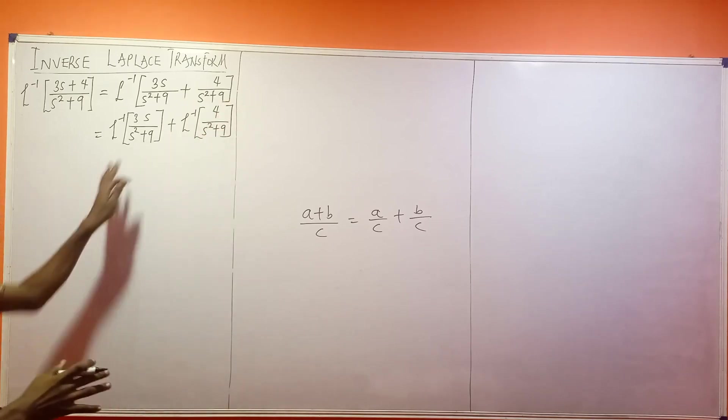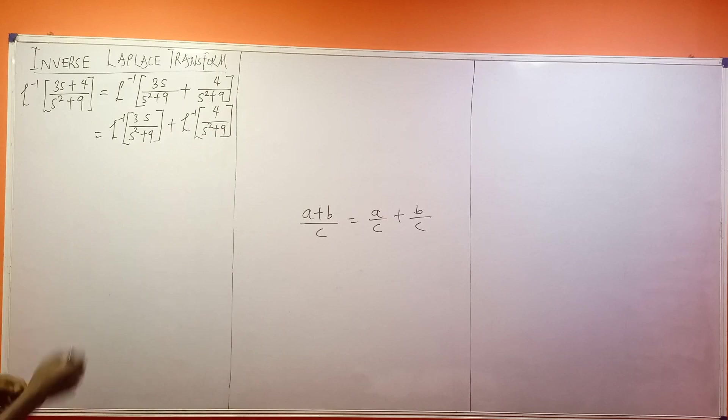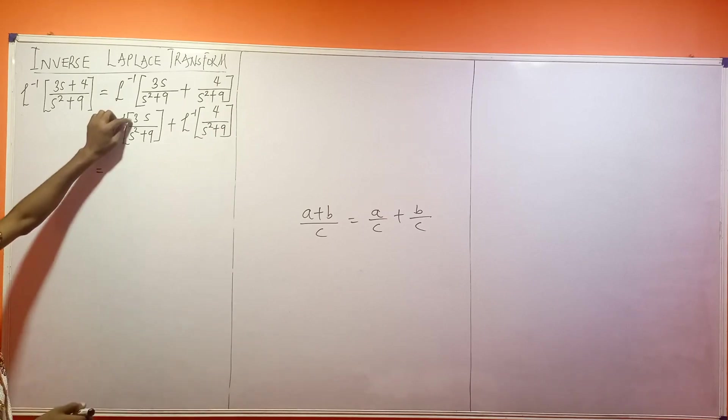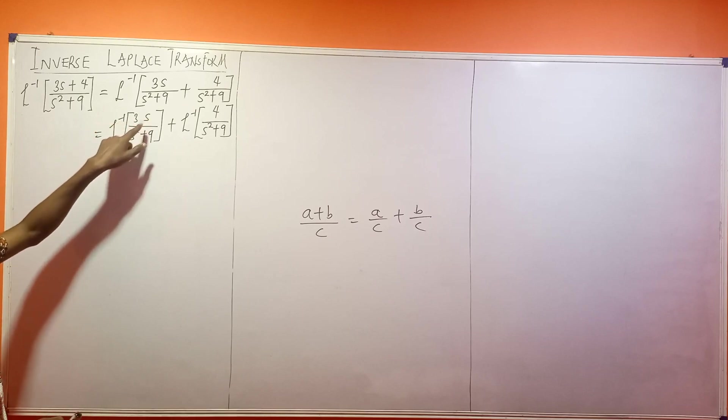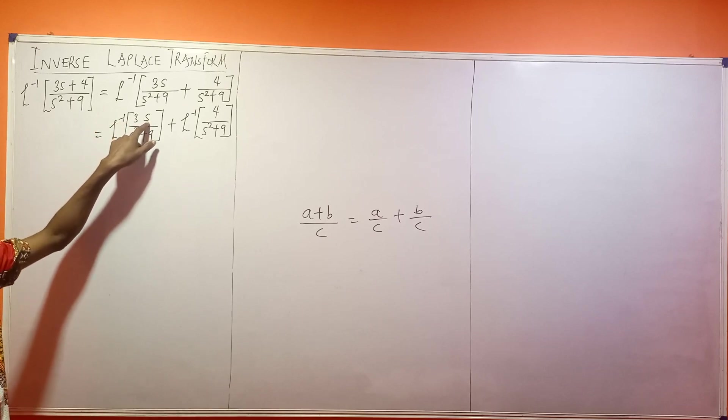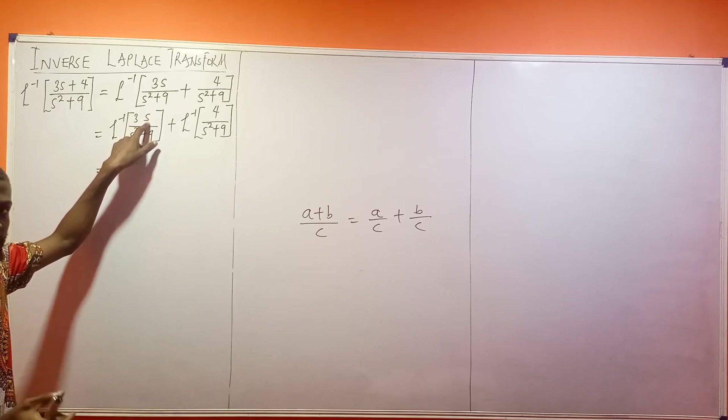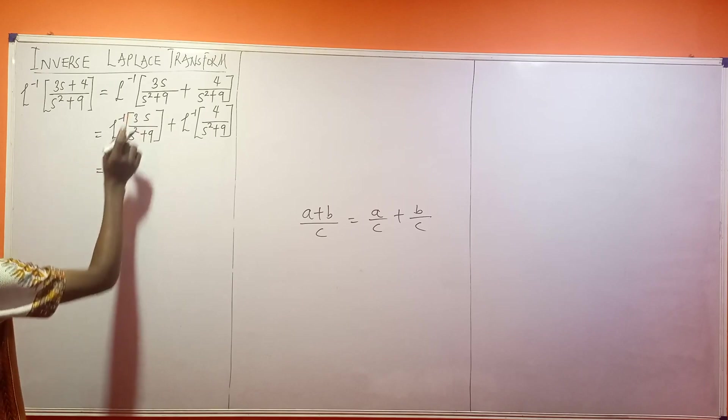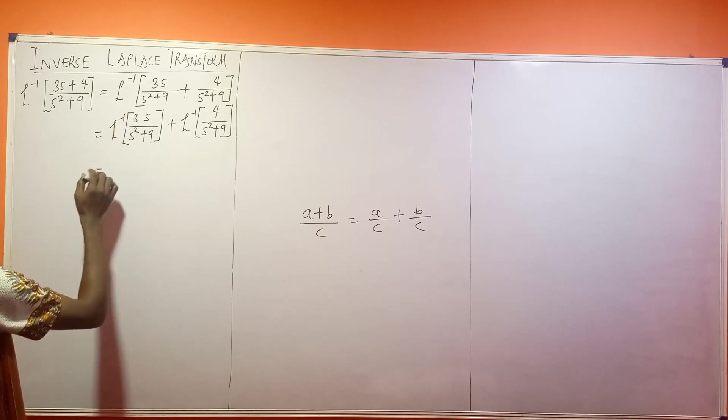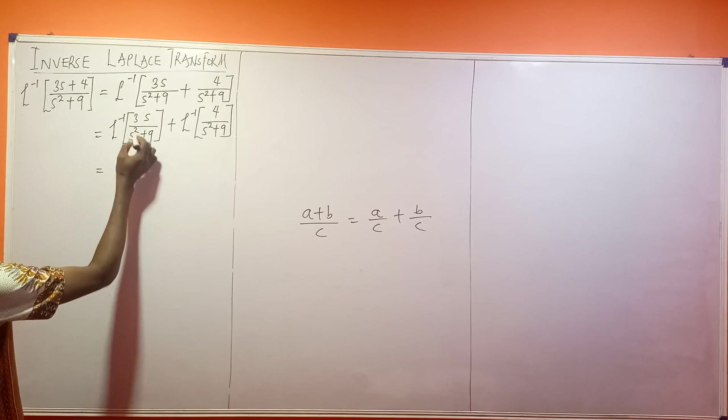So let us work out these individual inverses. So the first thing we're going to be doing here is this. Remember, this 3 you see here is actually a constant. So this is 3s. Now, when I have s at this part, what does it signify? Signifies cos. It signifies cos. So right now, I'm going to say this is 3 first of all.